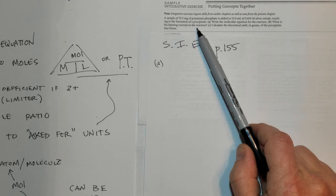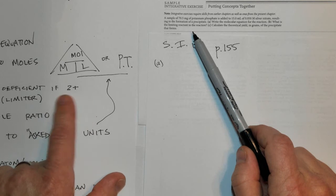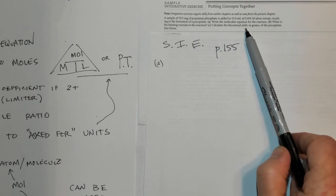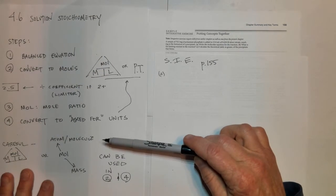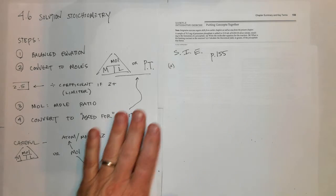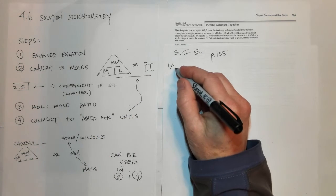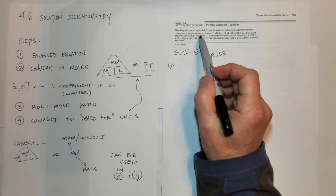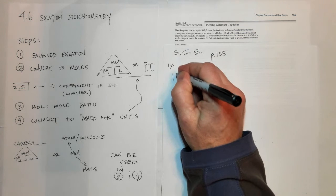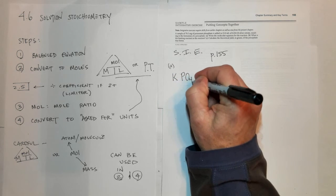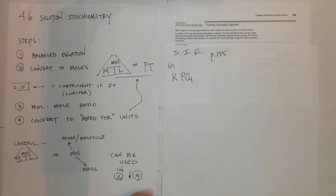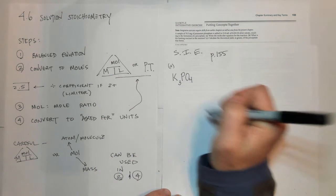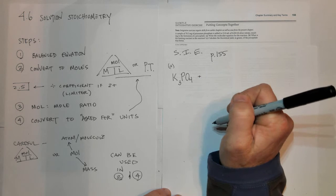Part B asks for the limiting reagent, so we'll do step 2.5. Part C asks us to calculate the theoretical yield in grams of the precipitate. For part A, step one is to write the balanced chemical equation. Remember that phosphate is PO₄³⁻ and potassium is group 1 with a +1 charge, so we need 3 potassiums, giving K₃PO₄. That is added to silver nitrate — silver is always +1 on the periodic table.